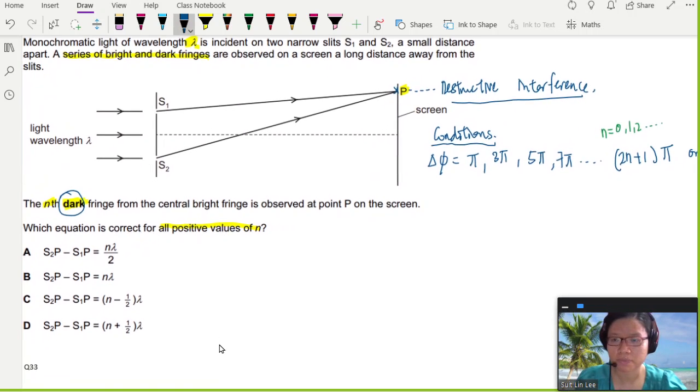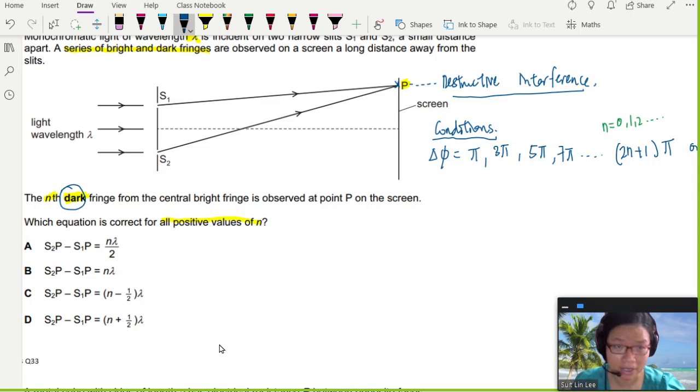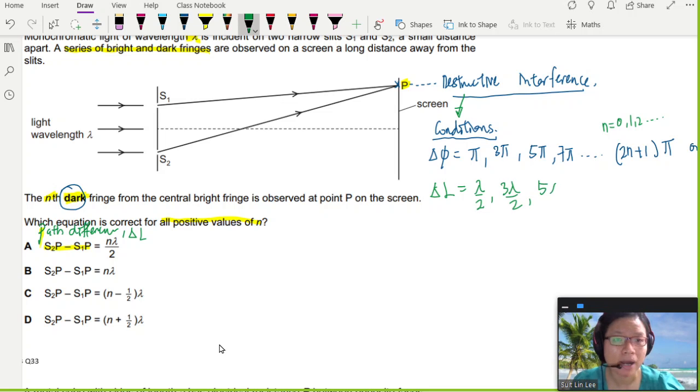But you can look at your answers, right? Your answers are all in terms of lambda. Because what we have here, S2p minus S1p is path difference. So your S2p minus S1p is path difference. Meaning when the wave reaches point P, S1 will not travel the same distance as S2. So this is path difference. I'm going to call it delta L. So the conditions for destructive interference is that your delta L must be - 2π is one complete cycle, which is lambda, meaning π is lambda over 2, 3π is 3 lambda over 2, 5π is 5 lambda over 2, and dot dot dot.